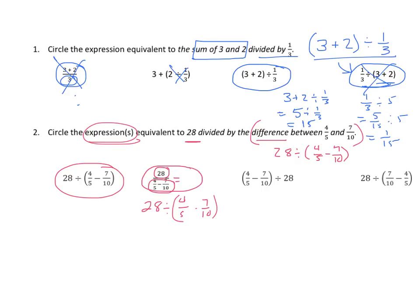So both of those are correct. Another choice switches the order of dividend and divisor — that cannot be correct. And yet another switches the order to 7/10 minus 4/5, which gives a negative number. We can't switch the order of the minuend and subtrahend, so those two are wrong. There are our two correct choices.